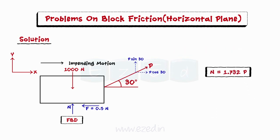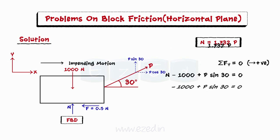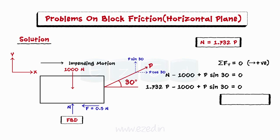Then we equate the summation of all forces in the y direction to 0. On substituting the value of N from equation 1 and then simplifying, we find that the magnitude of applied force P should be equal to 448.02 N for motion just to impend.